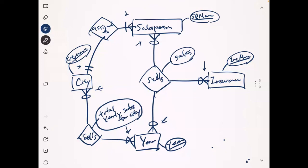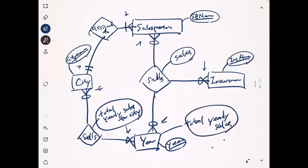The last piece of information is the total yearly sales across all cities, which depends only on the year. In a certain year they sell many products across many cities, and we have one total sales number for every year. We can simply store total yearly sales as an attribute in the Year entity. That's the sample solution for question two.